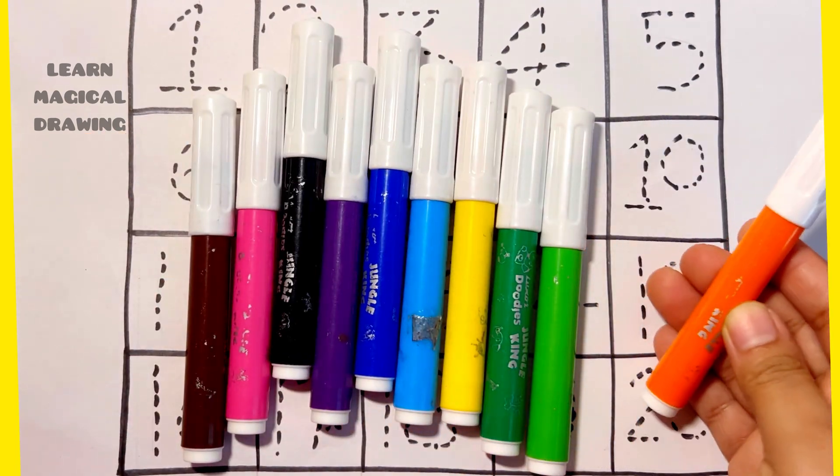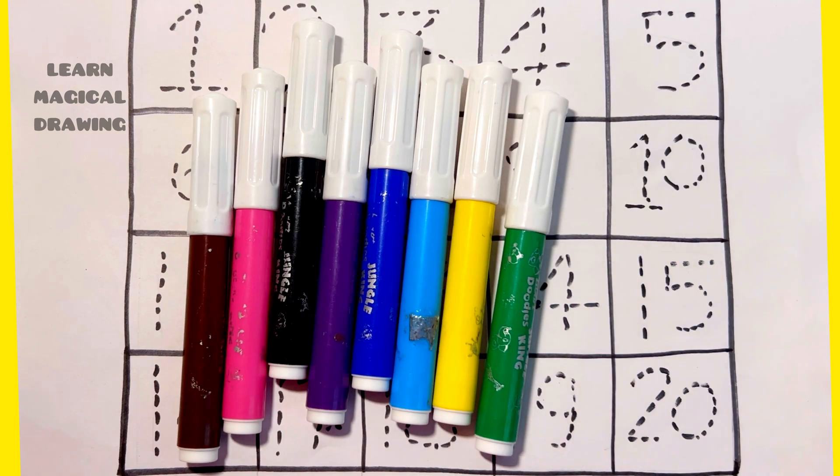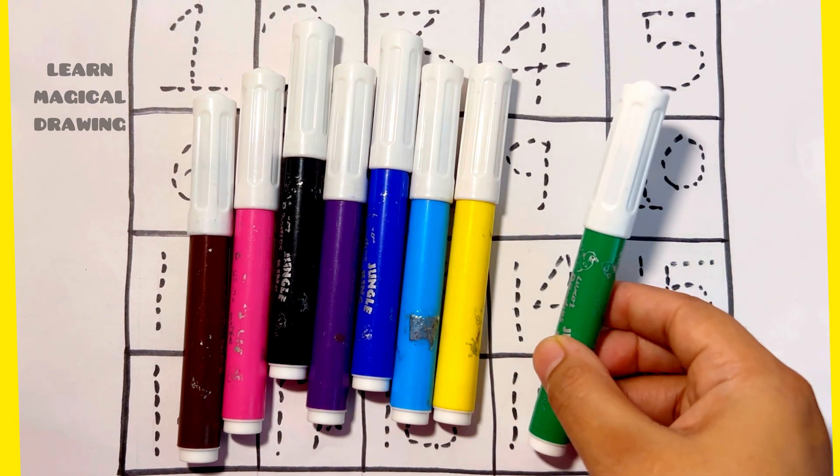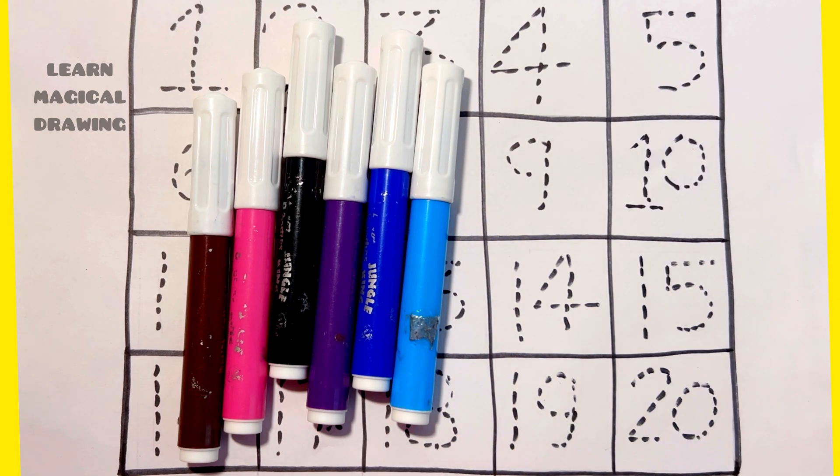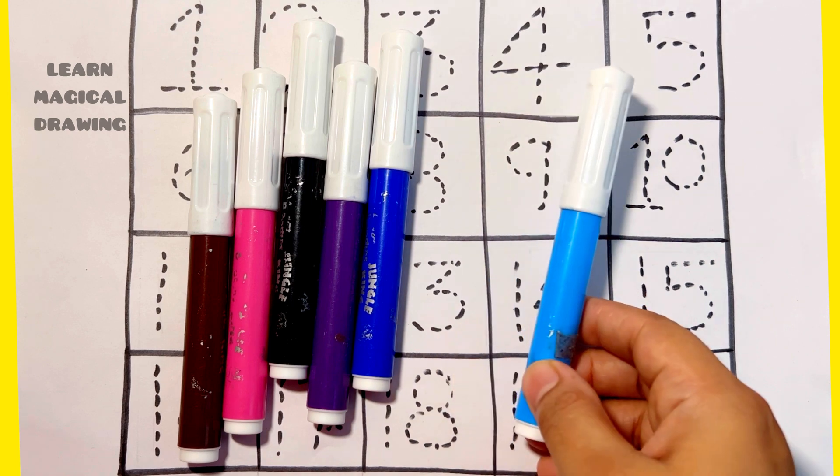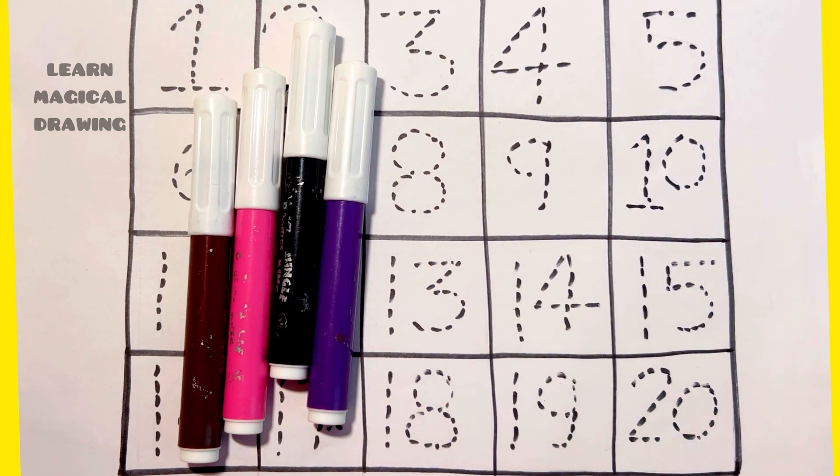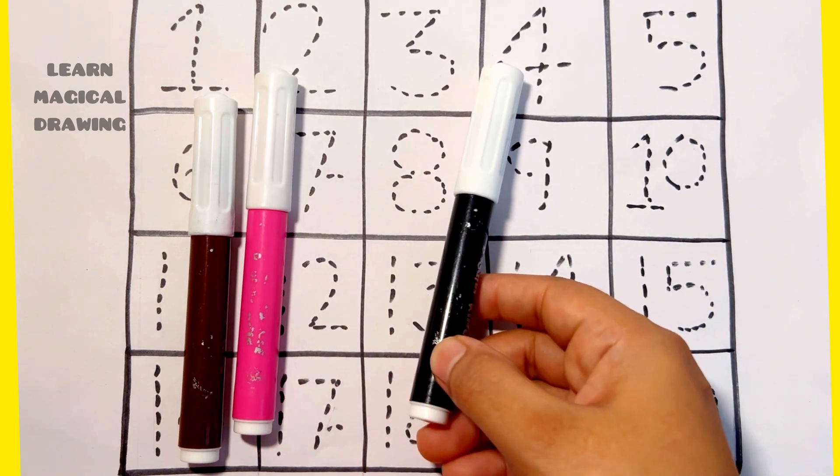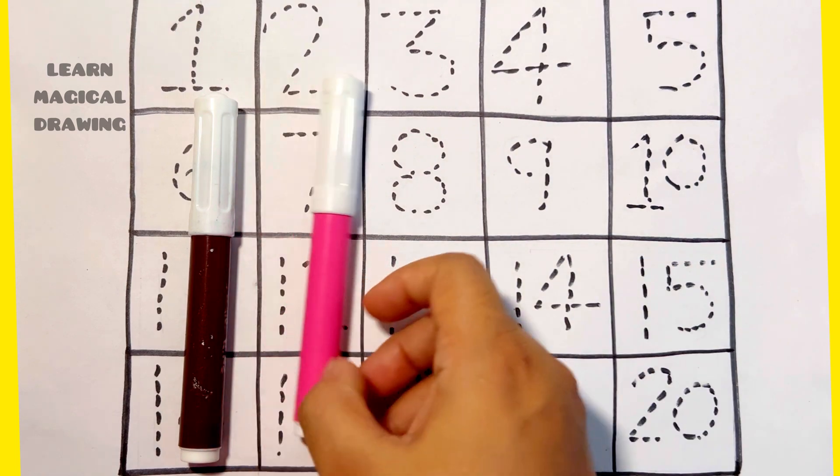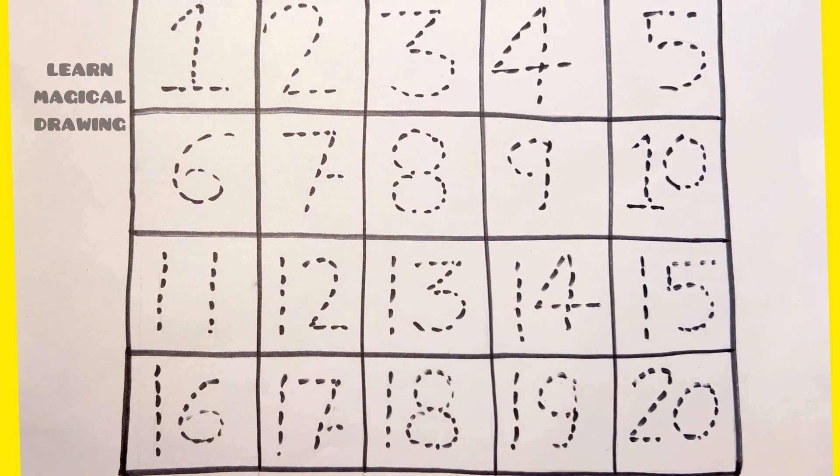Orange color, light green color, dark green color, yellow color, sky blue color, dark blue color, purple color, black color, pink color, and brown color.